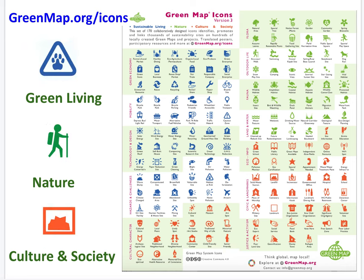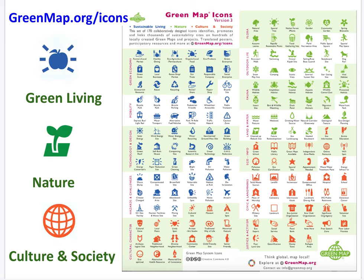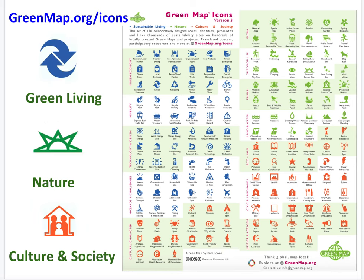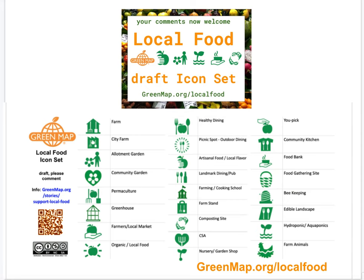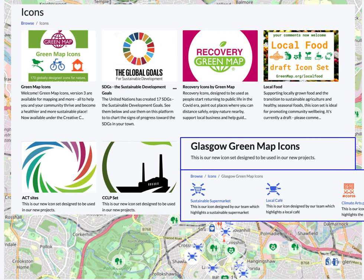OGM2 includes the original set of 170 green map icons designed for charting nature, culture, social justice, and sustainable living resources. New icon sets can be added as well, such as our local food draft set or our 2020 recovery icons, or related symbol sets such as the United Nations SDGs. Mapmakers can add customized icon sets for specific localities and custom base maps too.